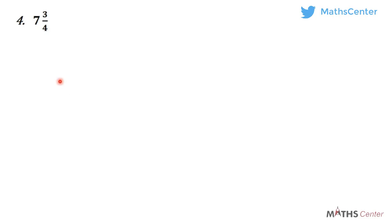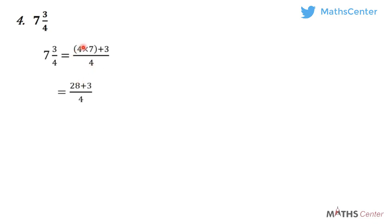Let's take the last example. We have 7 whole number 3 over 4. Once again, you multiply the denominator by the whole number part: 4 times 7. You add the result to the numerator, plus 3, divided by the denominator, which is 4. 4 times 7 gives 28, plus 3 divided by 4. You know that 28 plus 3 gives us 31, then we divide by 4. So we have learned how to change mixed numbers to improper fractions.